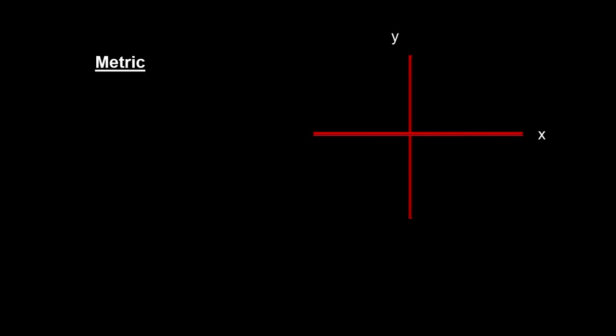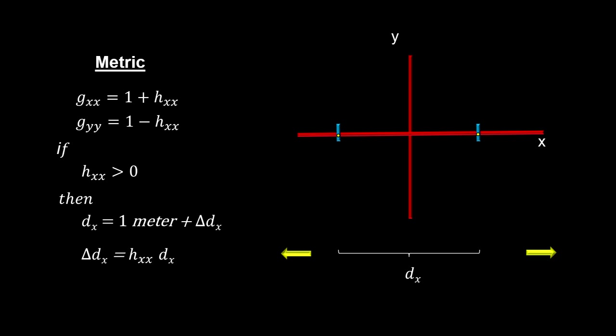To see what an oscillating H-plus metric does, we'll measure the changes in the distance between two points on the plane when a gravitational wave passes. Here we have an XY plane with the wave passing into the page. We mark two points on the X-axis, one meter apart, in Euclidean flat space where H is zero. When H is greater than zero, the distance between the two points on the X-axis become longer than one meter by an amount equal to H times the original distance.